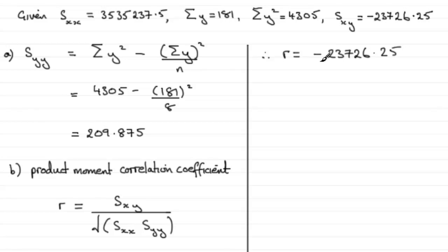And that is divided then by the square root of s_xx, which we've got up here, 3,535,237.5, and we multiply that by s_yy, and we found that out in the previous part, and that was 209.875.